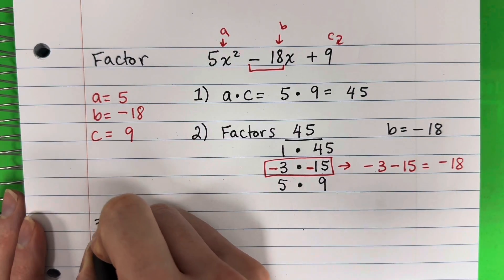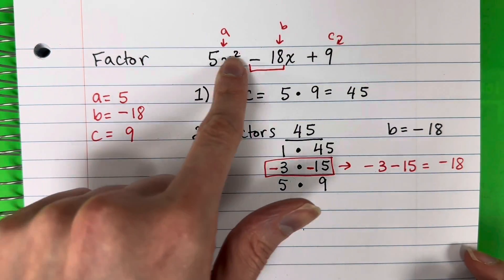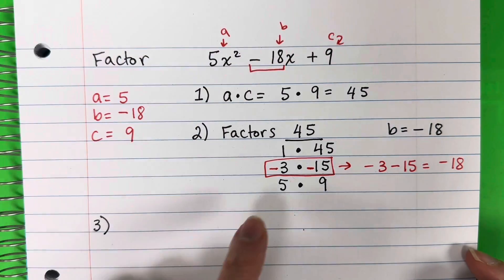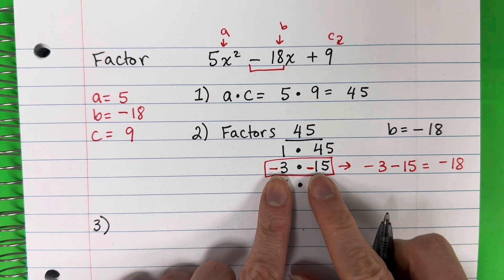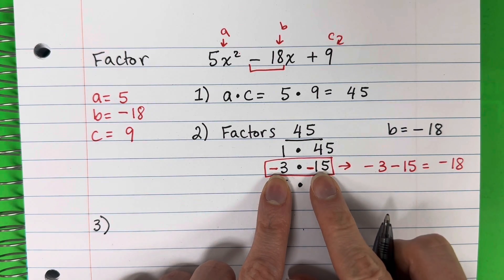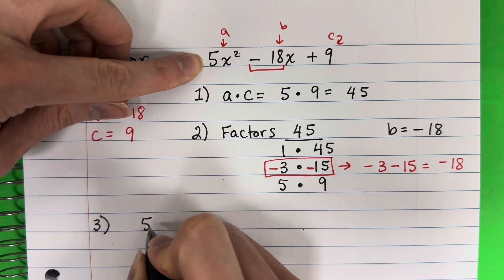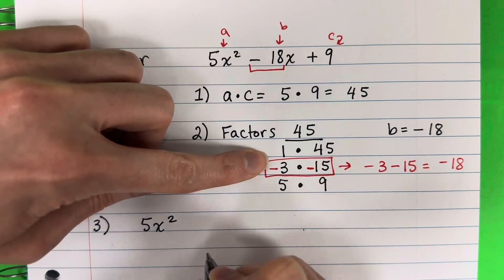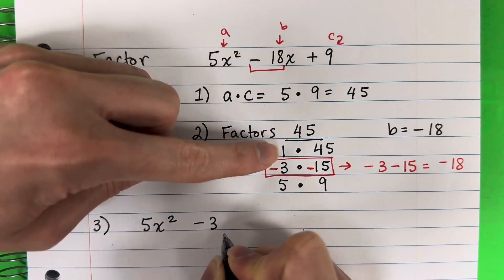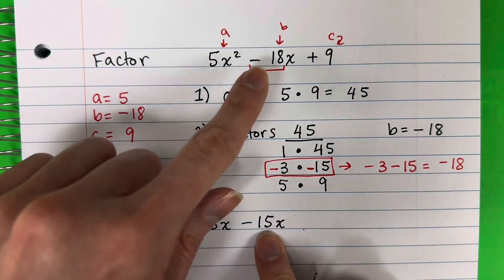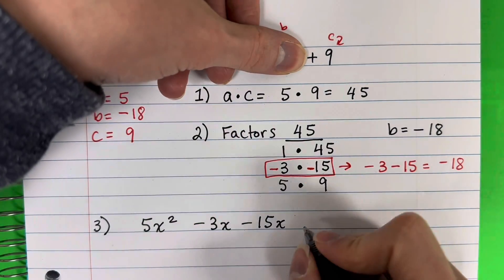Step 3: we're going to copy all of this, but instead of negative 18, I'm going to put negative 3 minus 15 in its place. I can do that because negative 3 minus 15 is equivalent to negative 18. So: 5x squared, then negative 3x minus 15x, and then copy the plus 9. Because negative 3x minus 15x equals negative 18x.